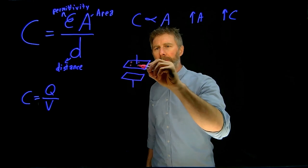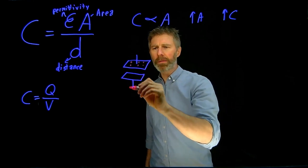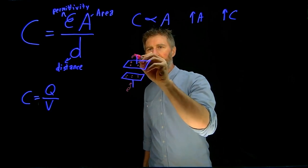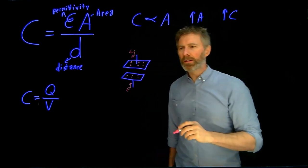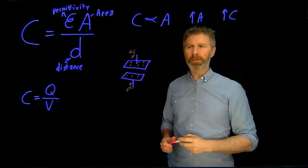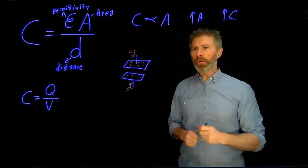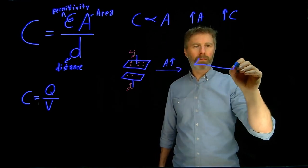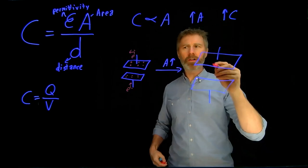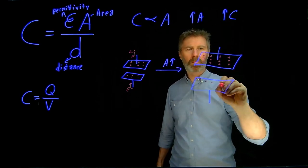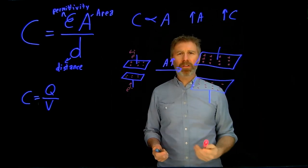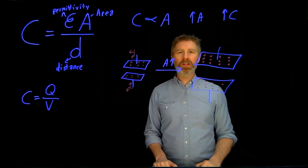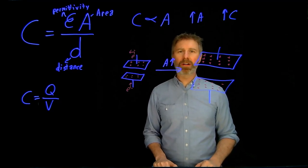there will be charge that builds up on those plates. Basically what's going to happen is electrons are going to come in the bottom, and then electrons will leave at the top, leaving positive charge on the top plate. Now if we were to increase the size of those plates, there is now more room for charges. So with the same amount of push, you can get more charges onto the plates because there's more space for them. That's why increasing the area of the parallel plates will increase the capacitance of the capacitor.